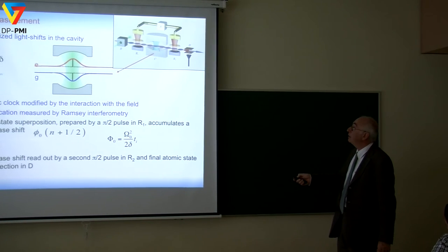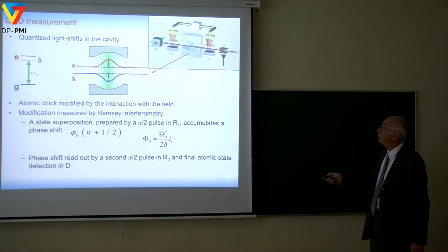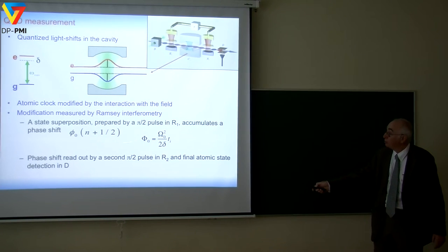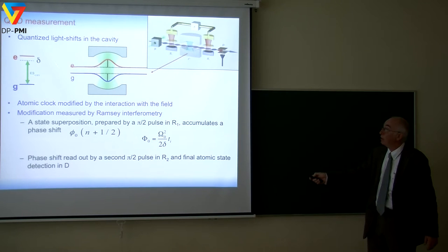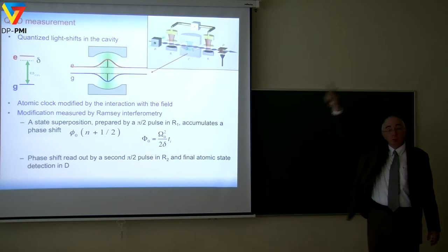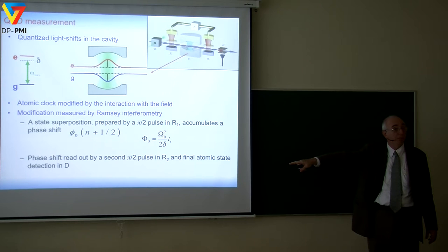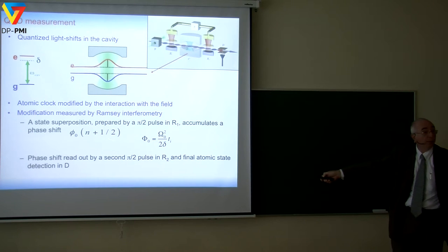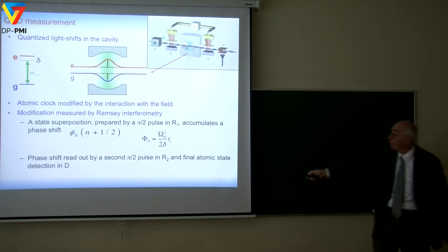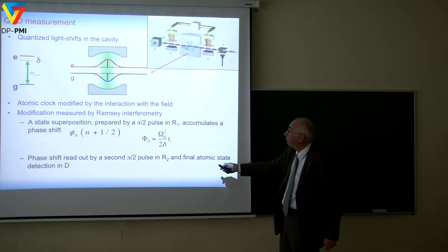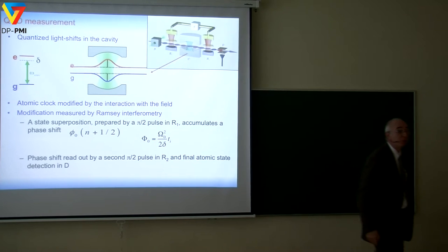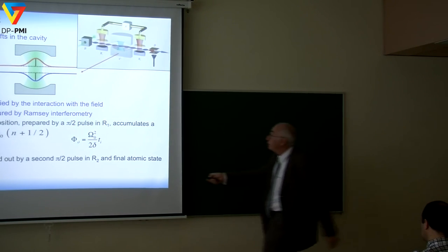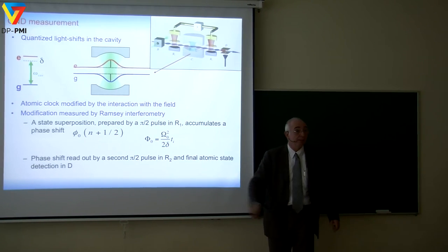The first to realize this was Braginsky in the 70s, who in the context of gravitational wave detectors showed that you can measure photons with a perfectly transparent detector — one that goes click when a photon goes through but lets the photon go through. We have all the ingredients to realize this experiment at the single-photon level or even below. The energy shift of the atom while it crosses the cavity is proportional to n + 1/2, where Φ₀ = Ω₀²/δ × T_int is the phase shift per photon, tunable by adjusting δ or T_int.